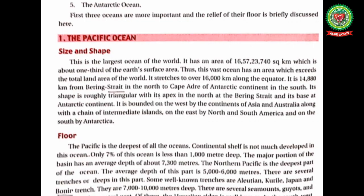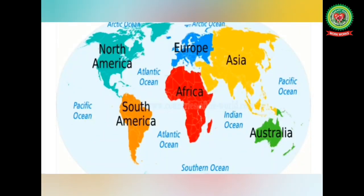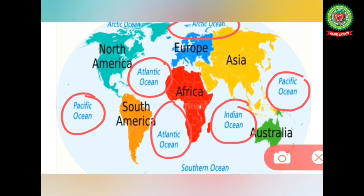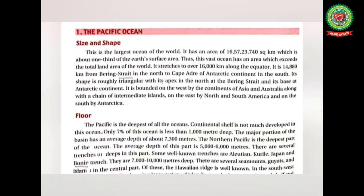In all, there are five oceans on earth: the Pacific Ocean, Atlantic Ocean, Indian Ocean, Arctic Ocean, and Antarctic Ocean. The first three oceans are the most important, and the relief of their floors will be discussed in this chapter. Let us now study about the Pacific Ocean in detail.